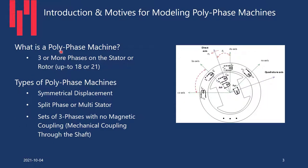What is a polyphase machine? A polyphase machine is a machine which has three or more phases on a stator or rotor — typically we could have up to 18 to 21 phases. There are different types. You could have symmetrical displacement, with n phases symmetrically distributed around the stator, where the angular displacement between each two phases is 2π/n. There is another arrangement called the split phase or multi-star, and sometimes sets of three phases with no magnetic coupling between them, with coupling done through mechanical shafts.